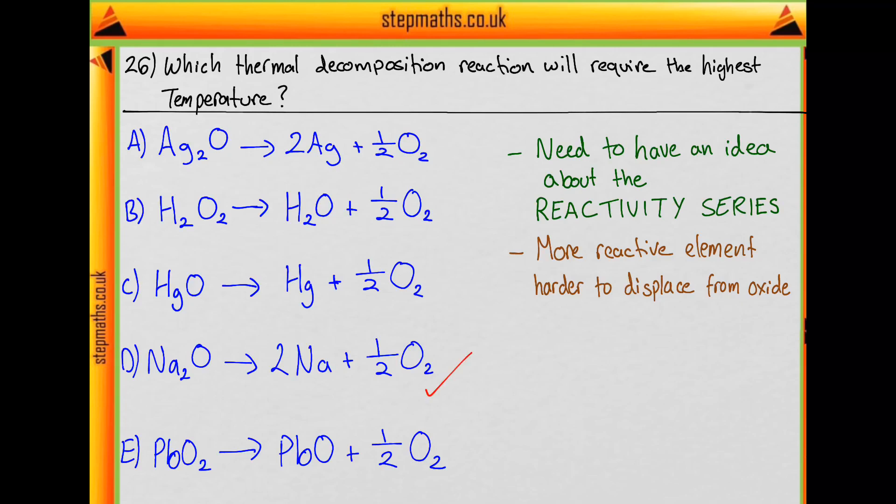And if you're interested in how the other elements compare, the reactivity series is given as this. So lead is our second most reactive element here, so it will require the second highest. Followed by hydrogen, then mercury, then lastly silver, is our least reactive element here. So it will require the lowest temperature.